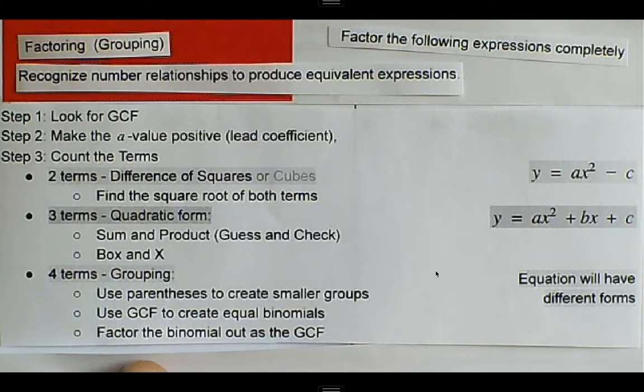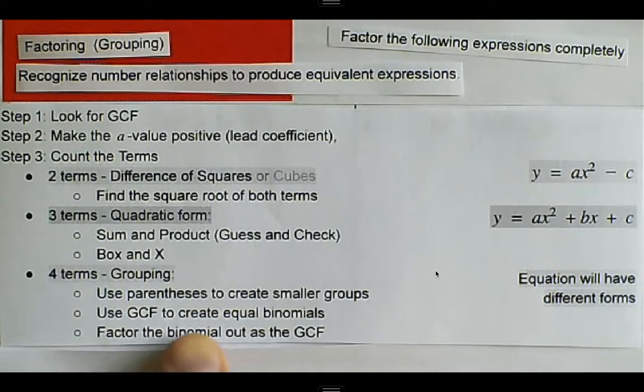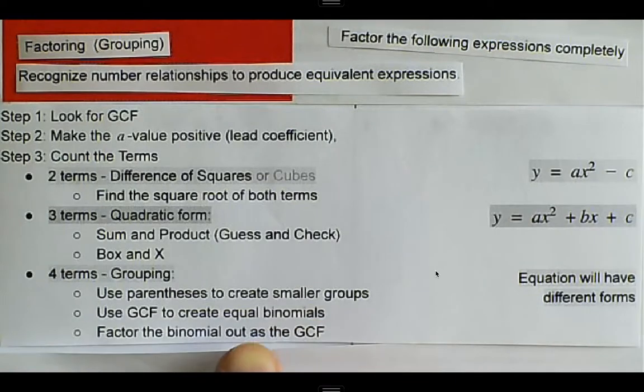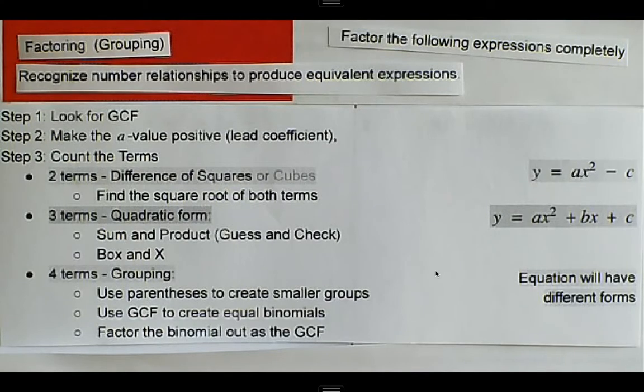The way that we do that is use parentheses to create smaller groups, then use the greatest common factor of each of those to create equal binomials, and then factor the binomials out as the GCF.